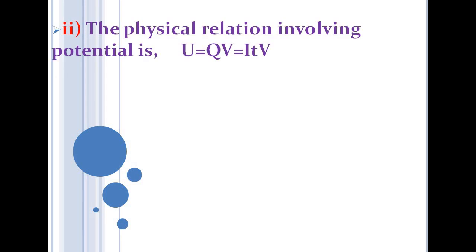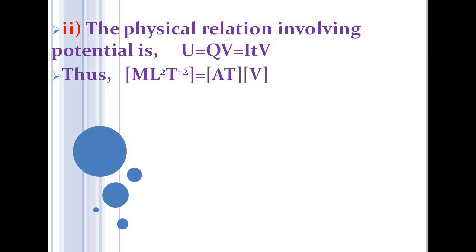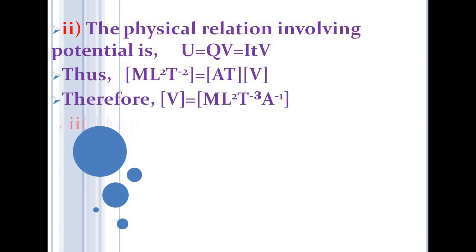For electric potential V: the relation is U = Q·V, where U is potential energy with dimension M L² T⁻². Since Q has dimension A·T, we get V = U/Q, giving the dimensional formula for electric potential as M L² T⁻³ A⁻¹.